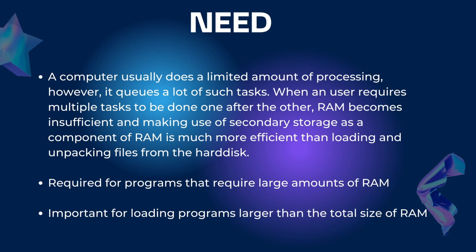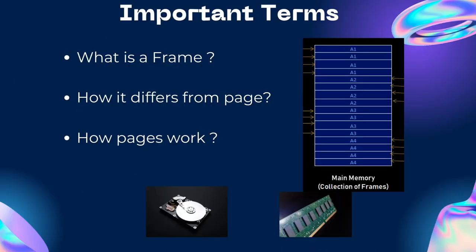Now let's proceed to important terms of virtual memory, which will be explained by my teammate Aditya. Before diving deeper into virtual memory, let's get familiar with some basic concepts. A page is a contiguous block of memory — typically sized around four kilobytes — and is also the smallest unit of data for the purpose of memory management. You can see a certain number of pages allocated for a particular process, like A1, A2, A3, A4, and so on.